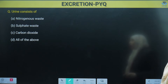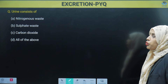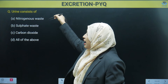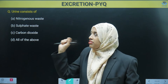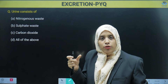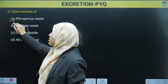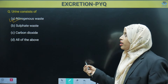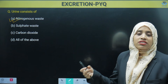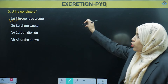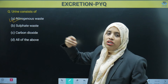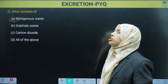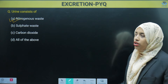Next: what does urine consist of? The options are sulfate waste, carbon dioxide, nitrogenous waste, or all of these. We should know that the composition of urine is mostly nitrogenous waste, along with few excess salts, few ions, creatinine, and nitrogenous waste. Sulfate is not it; carbon dioxide is released through respiration. So we have to mark nitrogenous waste, which is present in urine.